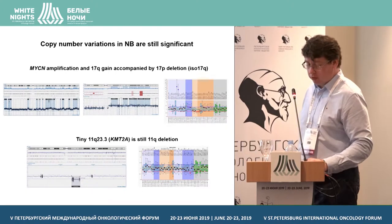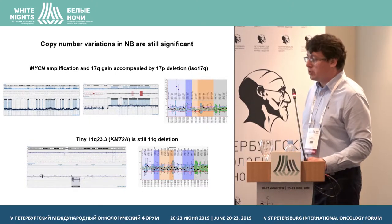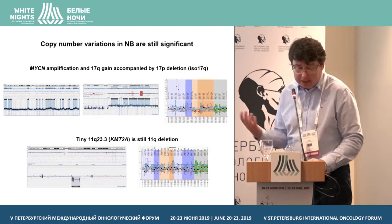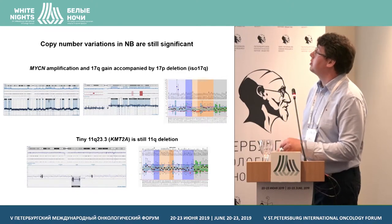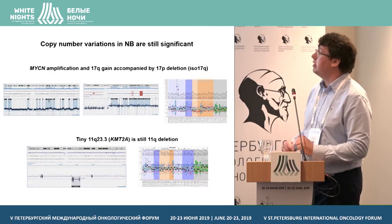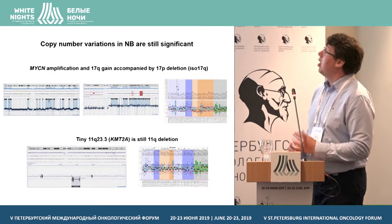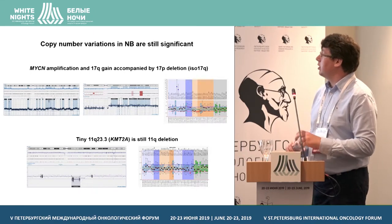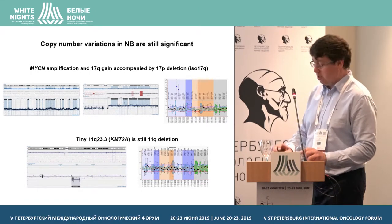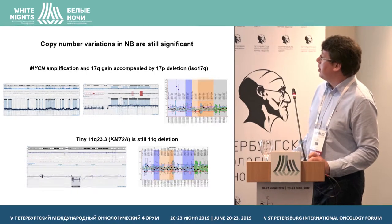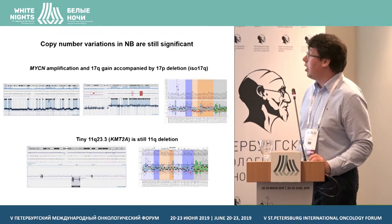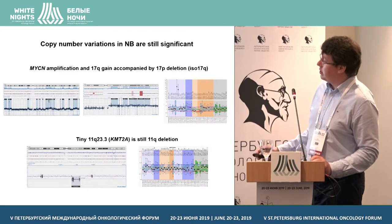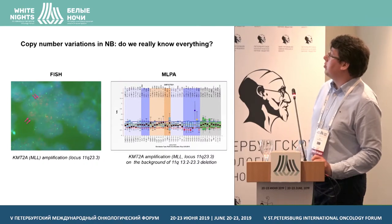Finally, some genomic data — I will not speak about mutations and sequencing but will focus on some interesting points from copy number changes. We now combine three techniques for these investigations: CGH, MLPA, and FISH, and sometimes see quite interesting things. For example, a very tiny deletion which includes only one gene, MLL or KMT2A — it is still an 11q deletion despite being very small.